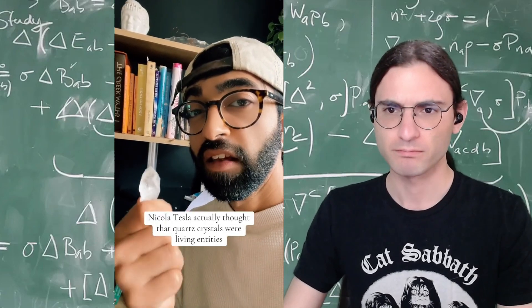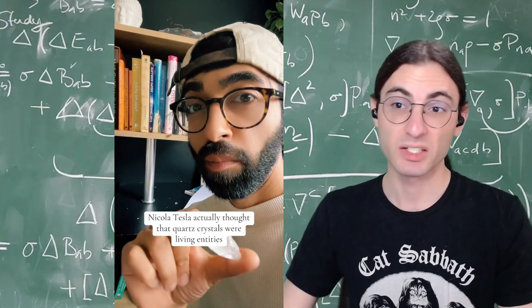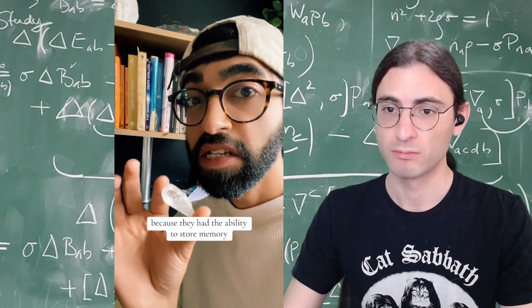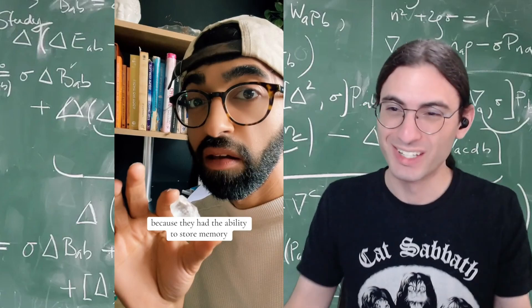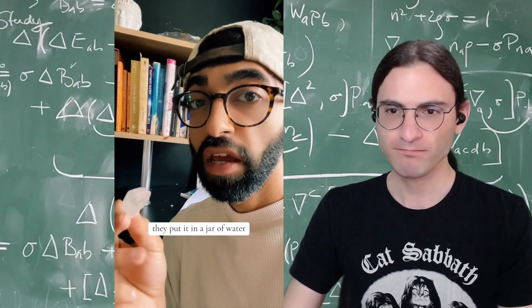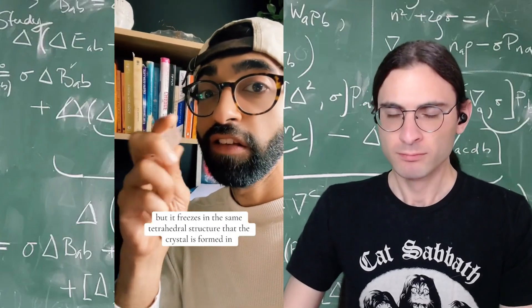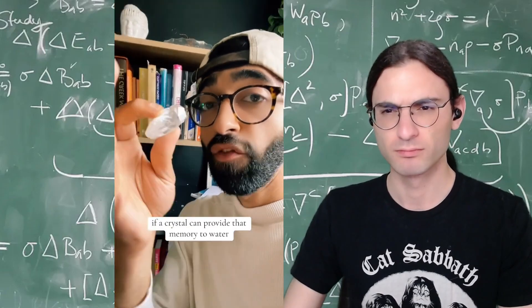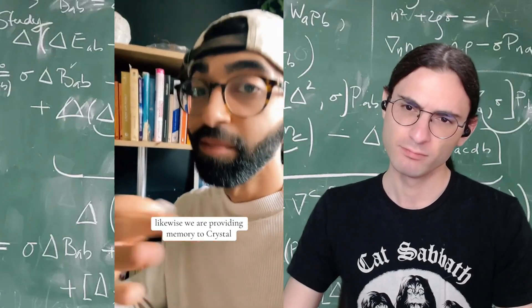But outside of that, Nikola Tesla actually thought that quartz crystals were living entities. Nikola Tesla also thought that you could marry birds. Because they had the ability to store memory. Now I don't know if you've seen that experiment where they get a quartz crystal, they put it in a jar of water, and then they put the jar of water in the freezer, and then it freezes, but it freezes in the same tetrahedral structure that the crystal is formed in. So essentially, if a crystal can provide that memory to water, likewise we are providing memory to crystal.